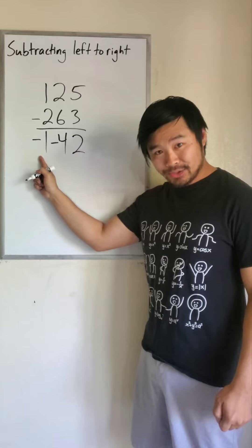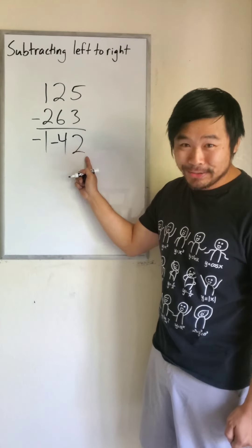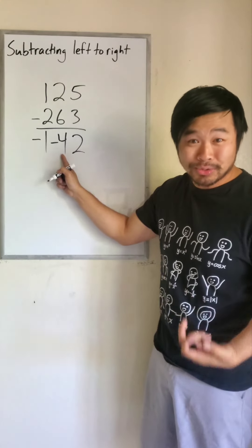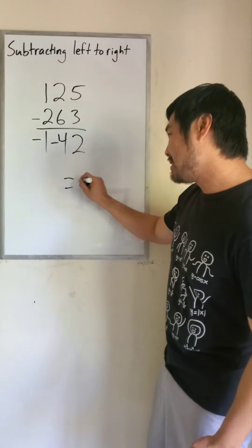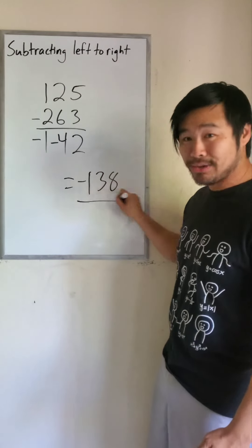So this is negative 100 minus 40 plus 2. Negative 100 minus 40 is negative 140. Add 2 to that, the answer is negative 138.